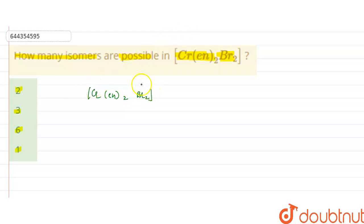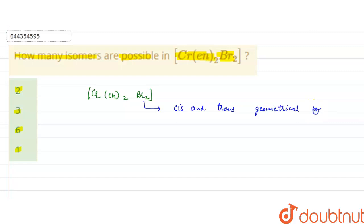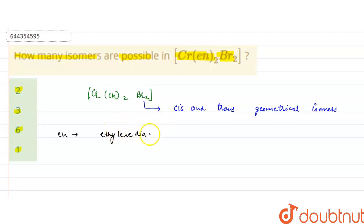Now as there are two bromine ligands present, two geometrical isomers — cis and trans — are possible. Also, en is ethylenediamine, which is a bidentate ligand.